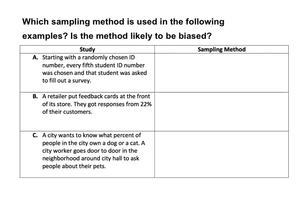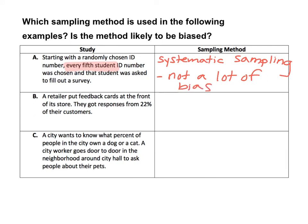Here's an example — decide which sampling method is used and whether it is likely to be biased. First: starting with a randomly chosen ID number, every fifth student ID number was chosen and that student was asked to fill out a survey. The keyword is 'every fifth student' — that is a systematic way to gather data because you're following the rule of every fifth student. This is called systematic sampling, and there is not a lot of bias risk with that method.